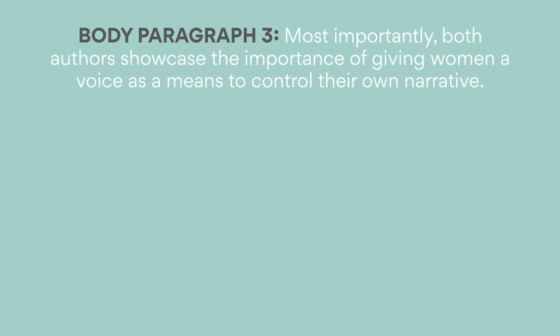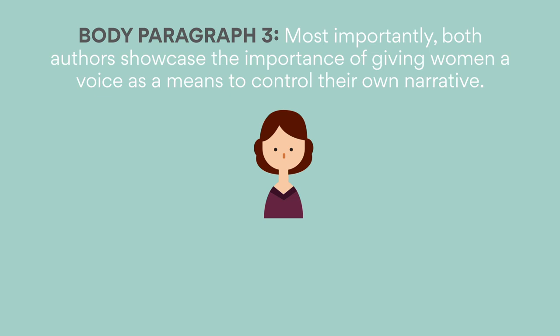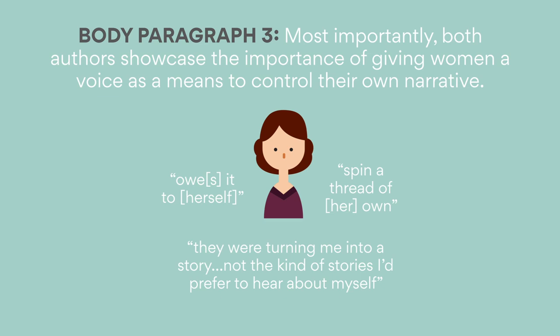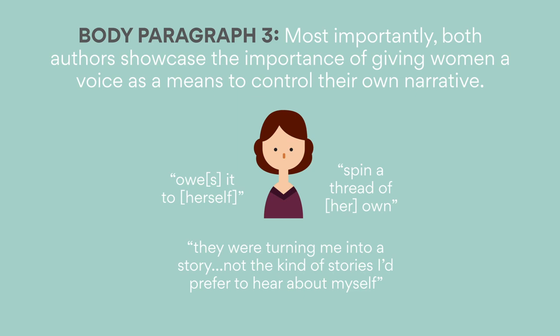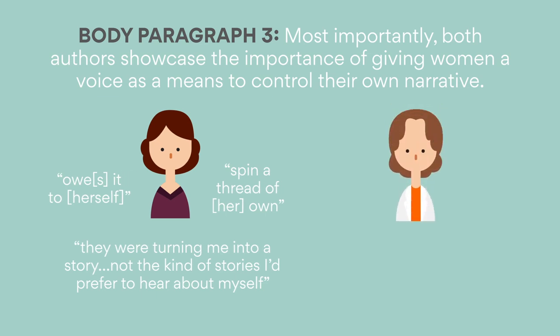Paragraph three: most importantly, both authors showcase the importance of giving women a voice as a means to control their own narrative. Penelope opens her reflection with an emphasis on how she owes it to herself to spin a thread of her own. She shares how she now has the opportunity to share her side of the story, whereas allowing others to speak for her meant that 'they were turning me into a story — not the kind of stories I'd prefer to hear about myself.' While Penelope is empowered to reveal her story and invites us to an alternate version of historical events, this isn't afforded to Rosalind in Photograph 51. Rosalind is literally sidelined — we just hear her lines, a recording, or she speaks from offstage, and is therefore unable to control her narrative.